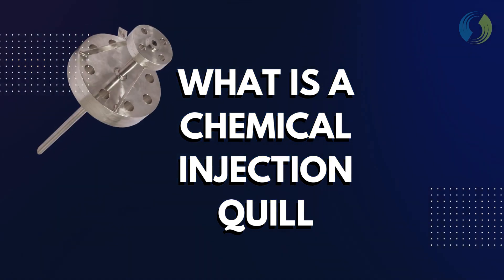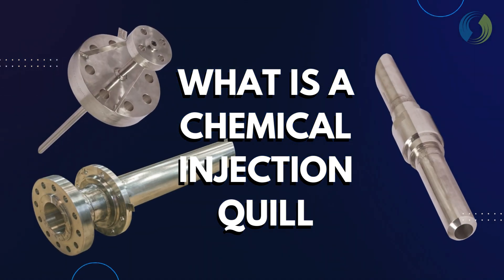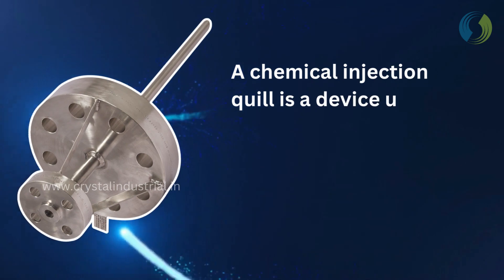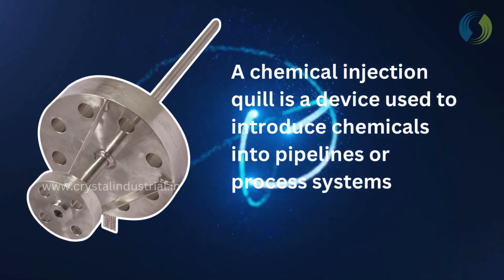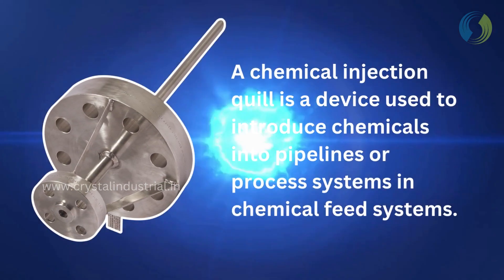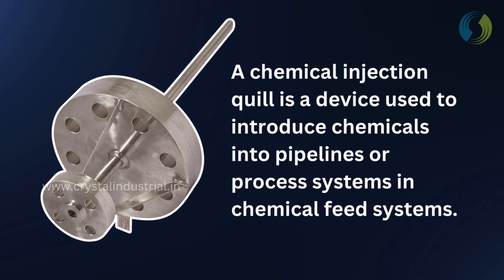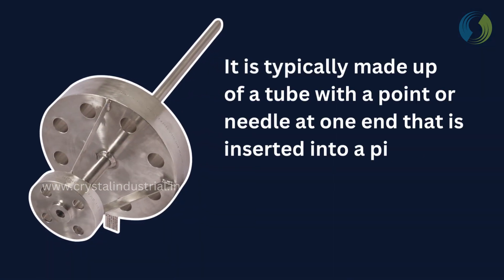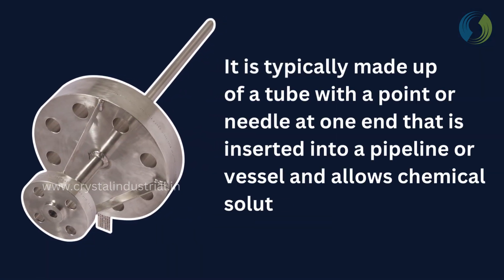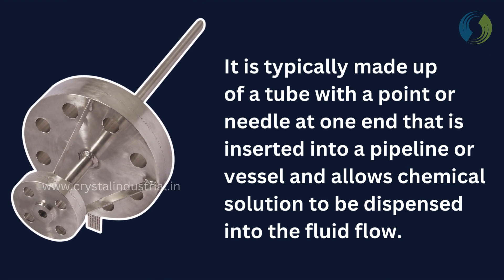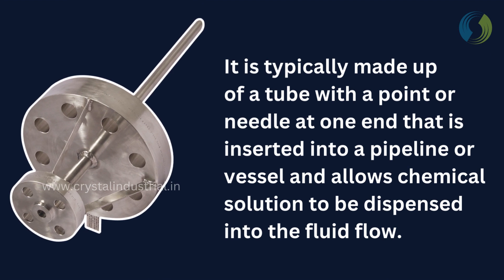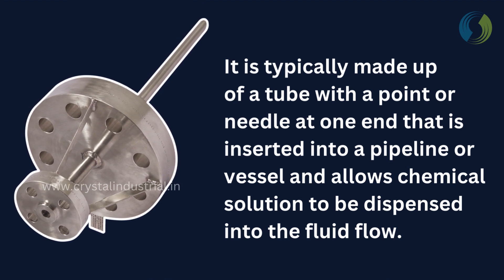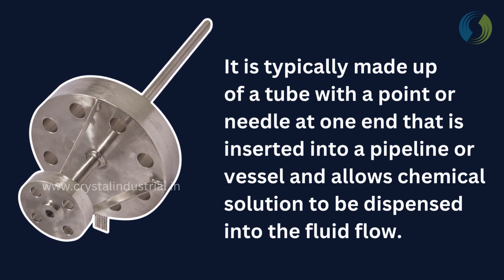What is a chemical injection quill? A chemical injection quill is a device used to introduce chemicals into pipelines or process systems in chemical feed systems. It is typically made up of a tube with a point or needle at one end that is inserted into a pipeline or vessel and allows chemical solution to be dispensed into the fluid flow.